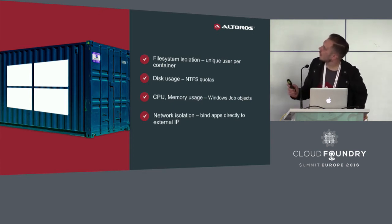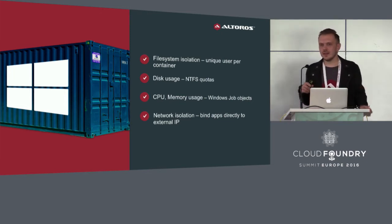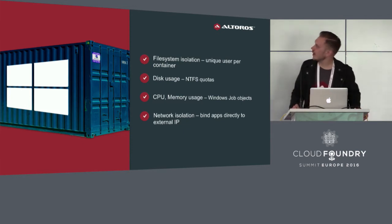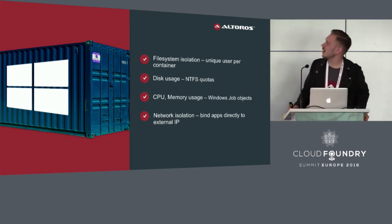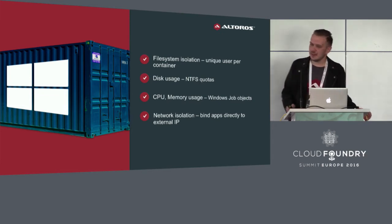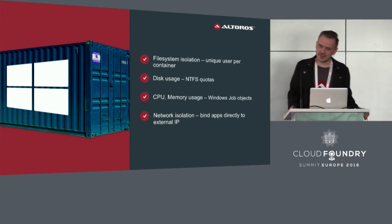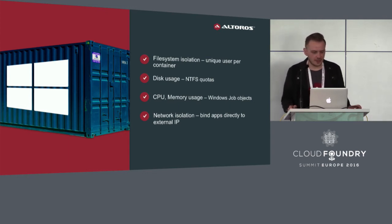For file system isolation, they create a user for every container to use default Windows ACLs for file access. For disk usage limiting, they use NTFS quotas. For CPU and memory limiting, there are Windows job objects. And for network isolation, the application launched inside a container binds directly to the external IP of the VM.